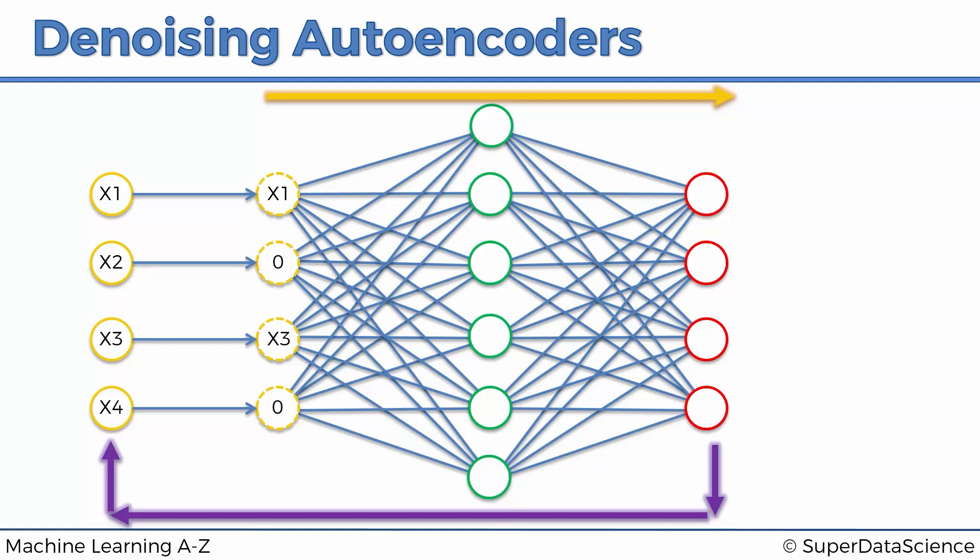And also, it's important to note here that, because this happens randomly, this type of autoencoder is a stochastic autoencoder. So basically, it depends on this random generation or random selection of which values are going to be zeroed out. And so it just becomes a stochastic type of autoencoder.